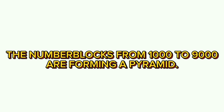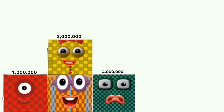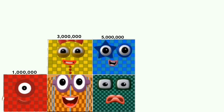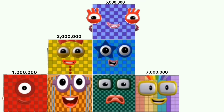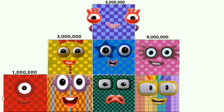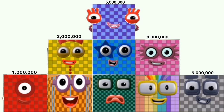The number blocks from 1,000 to 9,000 are forming a pyramid. 1,000, 2,000, 3,000, 4,000, 5,000, 6,000, 7,000, 8,000, 9,000.